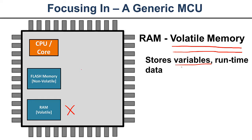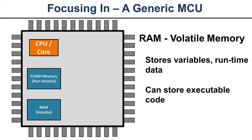RAM also handles intermediate computations. It can store executable code depending on the architecture — some systems like to completely separate executable code from data so they can be accessed simultaneously, while others don't. The important thing to keep in mind is that RAM doesn't have anything in it after boot. You need a bootloader to dump data from some source — say, flash memory — into RAM before you can execute.